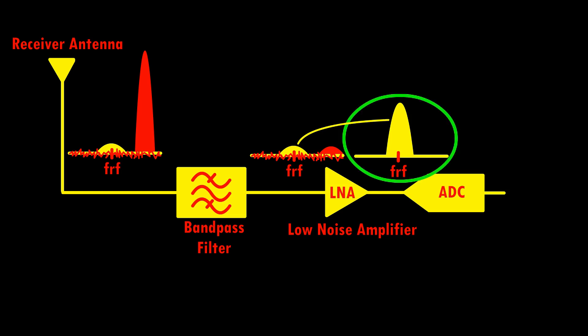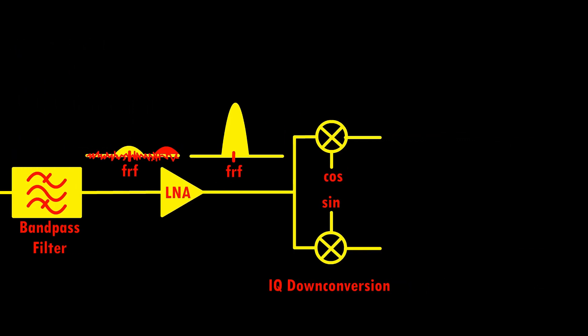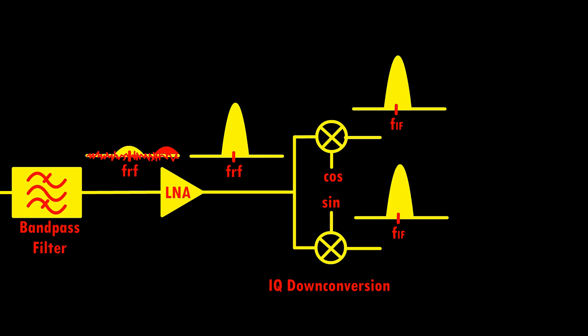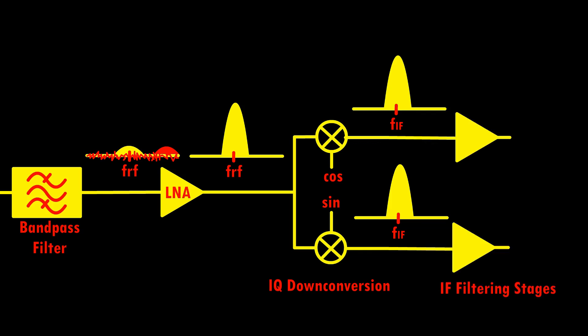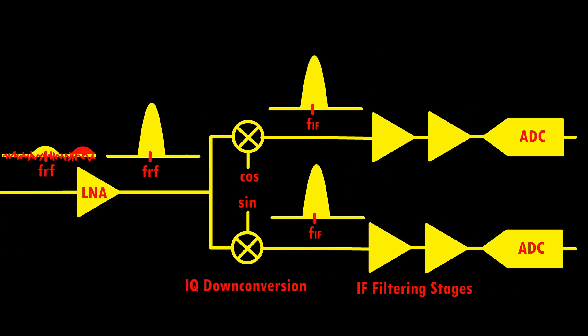After amplification, the signal is still a modulated RF carrier. In order to extract the desired bit stream from it, we need to convert it back into I and Q bit streams and shift the frequency back from RF to low-frequency baseband. This is done using I and Q mixing in the same way as on the transmitter side, but with the path reversed. The RF signal is down-converted into I and Q baseband signals, which are then further filtered to contain the signal bandwidth, with additional amplification if needed to meet the ADC input range requirements.